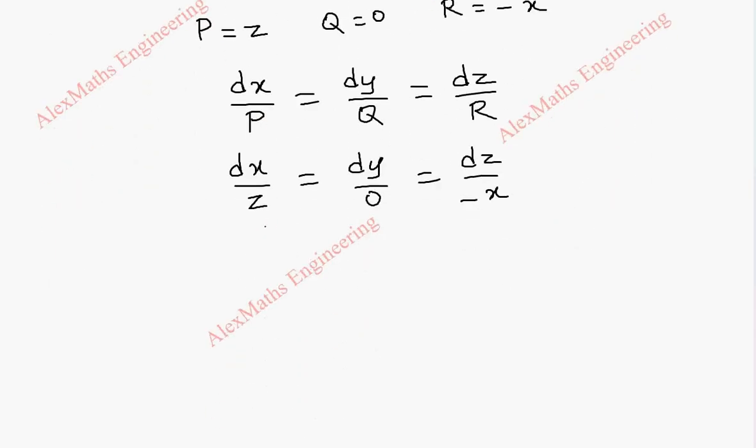Now first part we are going to group these two. What happens is dx by z equal to dy by 0. By taking the 0 to the other side, it is 0 into dx by z equal to dy.